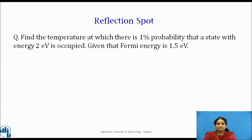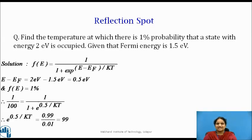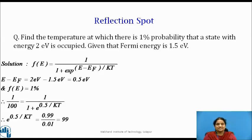Students, now please pause the video and try to solve this numerical. The solution is: from the Fermi-Dirac distribution function, F(E) = 1 / (1 + e^((E − E_F) / KT)), where E − E_F = 0.5 eV and F(E) = 1%. Substituting the values, we get the temperature as 1262 Kelvin.